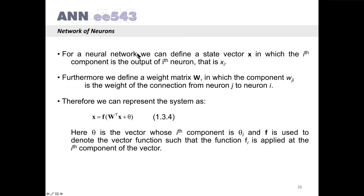For a neural network, we can define a state vector x, in which the i-th component is the output of the i-th neuron. If we have n neurons in the neural network, then the size of the state vector will be n. Furthermore, we define a weight matrix W, in which the component w-ji is the weight of the connection from neuron j to neuron i.